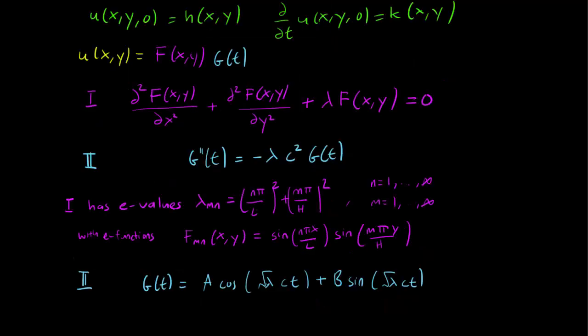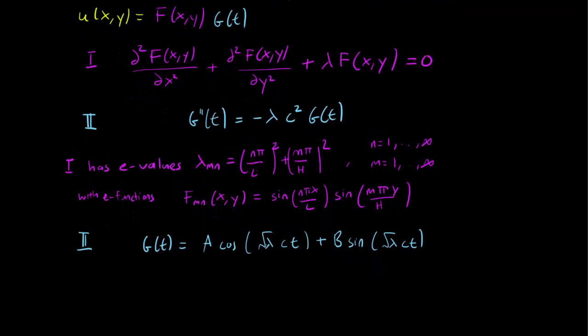As for the ODE, this is an ODE that we have solved a few times before, and we get g(t) equals a cosine of √λ ct plus b sine of √λ ct. And since we know how to solve both 1 and 2, we know what the product solutions of u are.